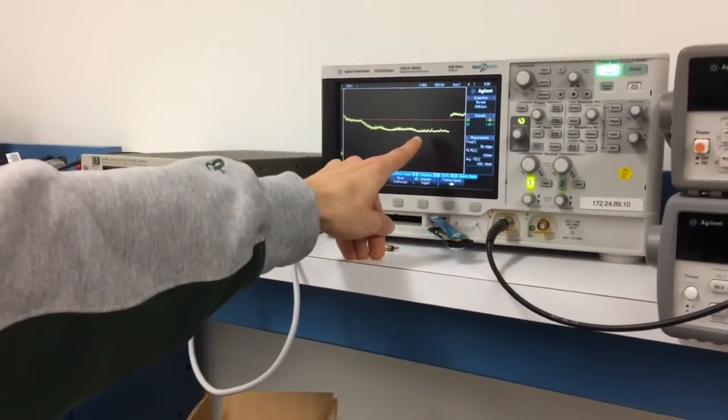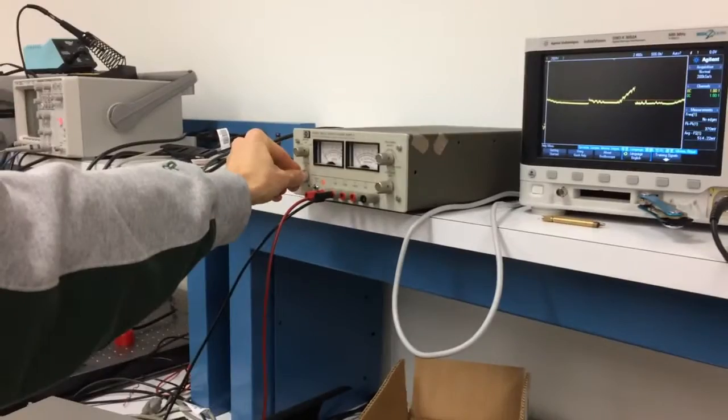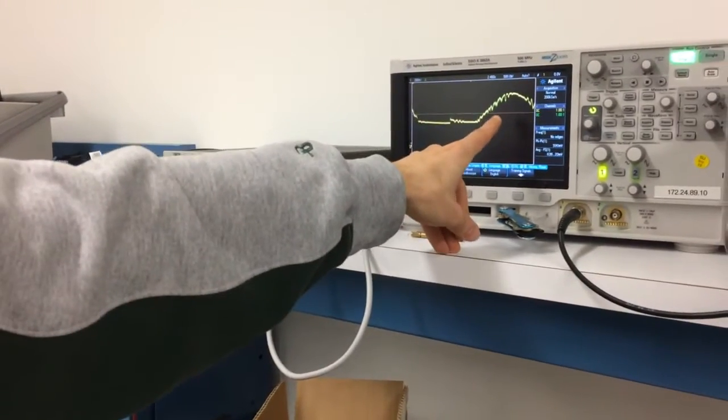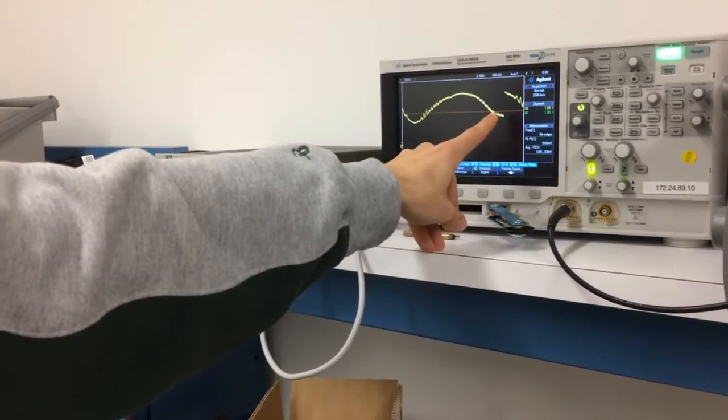You can see the output of the signal back over here. And when I change the voltage you should be able to see it start to swing. So that's one period there and there's a second period.